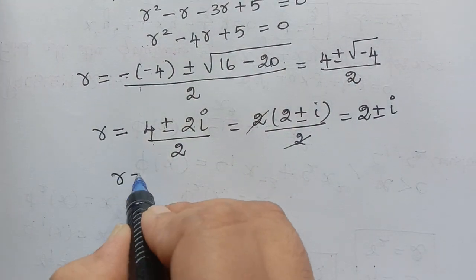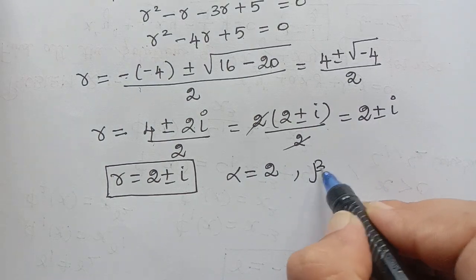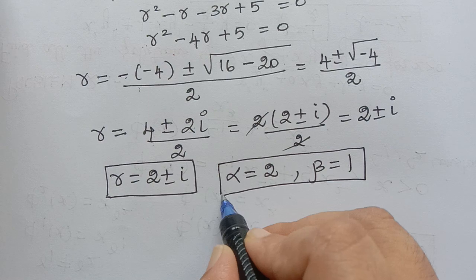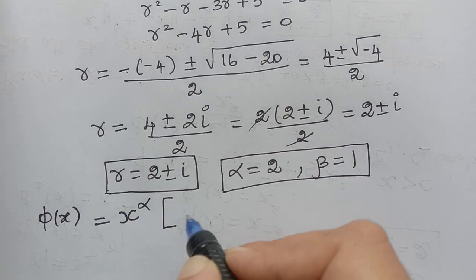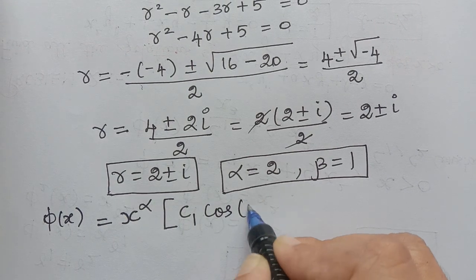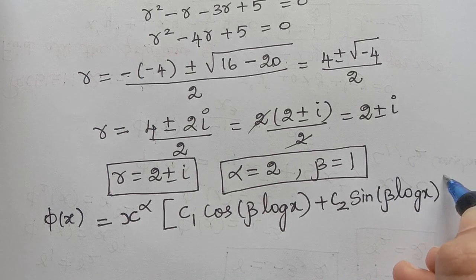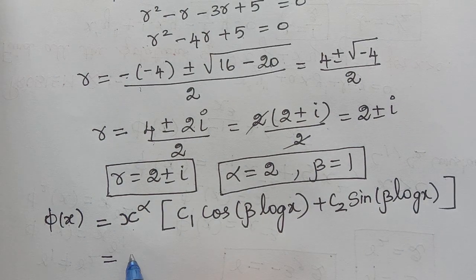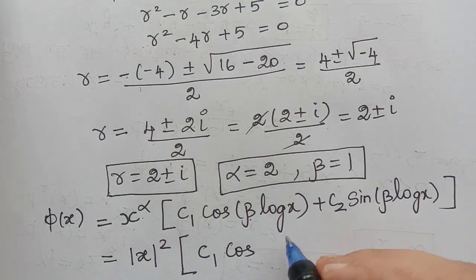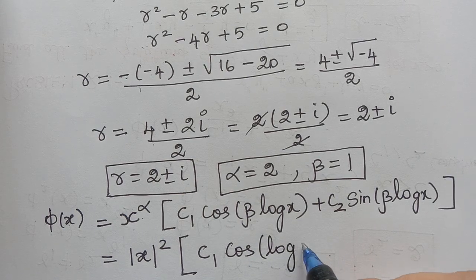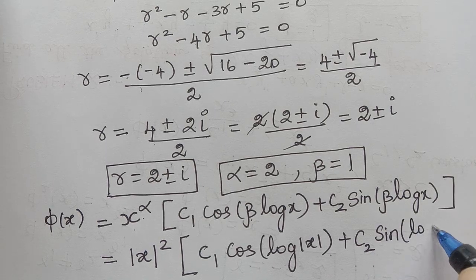Therefore r = 2 ± i, so α = 2 and β = 1 (real part is 2, imaginary part is 1). The general solution is φ(x) = x^α · (c1·cos(β·log x) + c2·sin(β·log x)). Since the condition is |x| > 0, we write φ(x) = |x|² · (c1·cos(log|x|) + c2·sin(log|x|)).